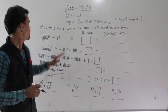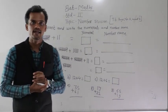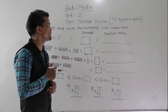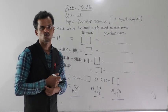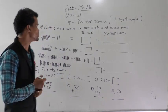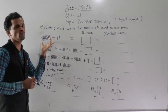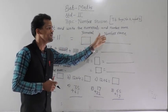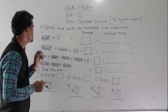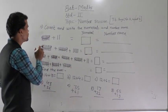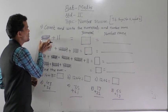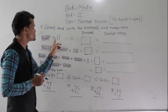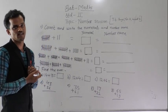Now we will solve question number 11. The instruction is to count and write the numerals and number names. See here — this is a bunch of 10 pencils, plus 2 single pencils.